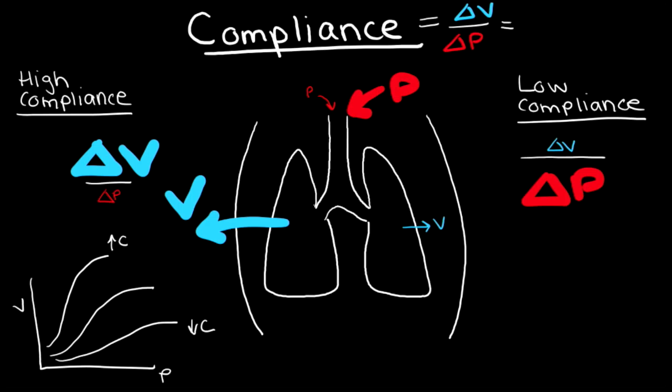When we're talking about compliance in a mechanically ventilated patient, the change in volume is the tidal volume, and the change in pressure is plateau pressure minus the PEEP. PEEP is one of our set variables, so we don't have to calculate that. Sarah is in volume control mode, so her tidal volume is set as well. We just saw how we calculate the plateau pressure by doing an inspiratory hold. The reason we use plateau pressure to calculate compliance is because this is the pressure that actually goes towards distending the alveoli.